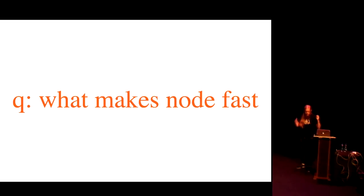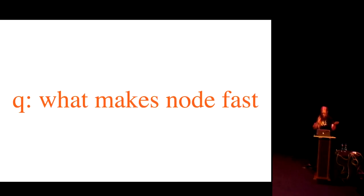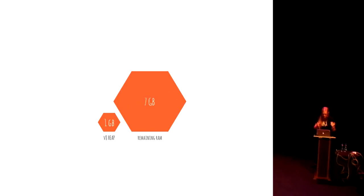People say Node's fast. I've heard from a lot of people that Node is like the faster Rails, which is a crazy conception of Node, but people perceive it that way. Hopefully I can talk about why it's fast — V8 is really why it's fast, and that's why Node exists. Thank you to the V8 team.